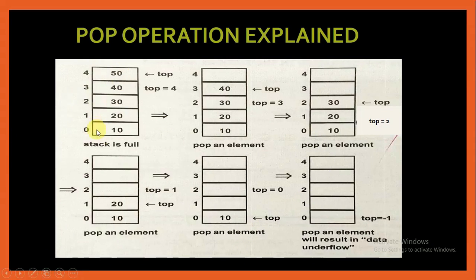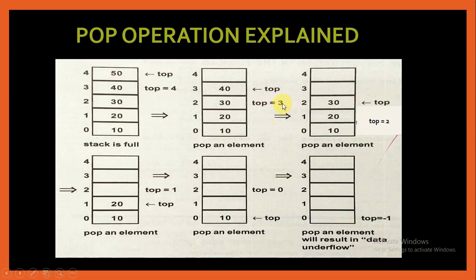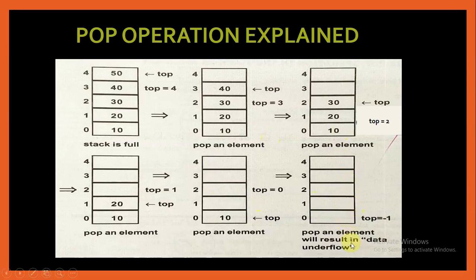In the memory diagram, we pushed 5 elements so top is at index number 4. Performing a pop operation simply decrements top to 3. Another pop decrements top to 2. Performing another pop makes top become 1, leaving 2 elements in the stack. Another pop makes top become 0 with only 1 element. One more pop makes top become minus 1, so the stack is empty. If we further try to perform a pop operation, it will result in data underflow.